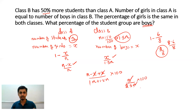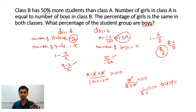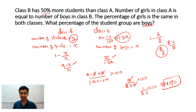Now solving: the +x and −x cancel out. So we get n / (n + 1.5n) × 100 = n / 2.5n × 100 = 1/2.5 × 100 = 40. So in total, 40% of the student group are boys in both classes. The answer for this question is 40%.